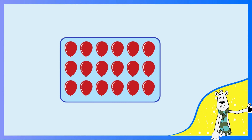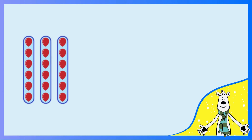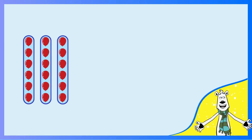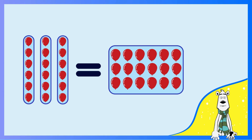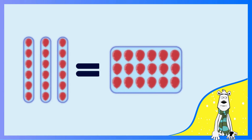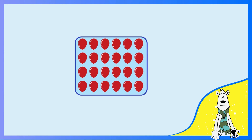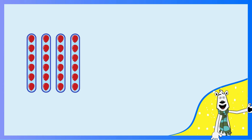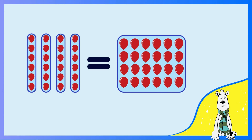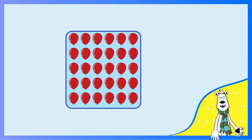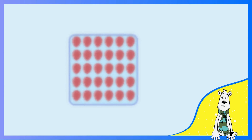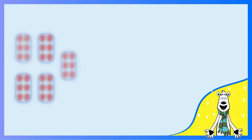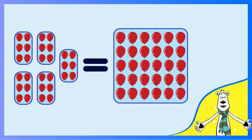18 balloons — that's 6 x 3, which is 18! Look at all 24 balloons — that's 6 x 4, which is 24! We have 30 balloons — that's 6 x 5, which is 30!